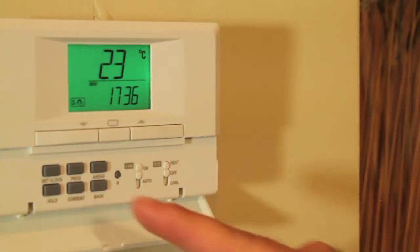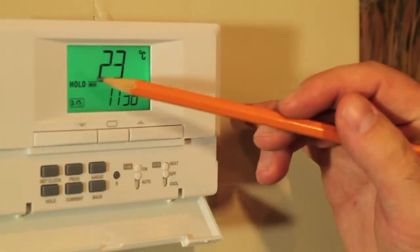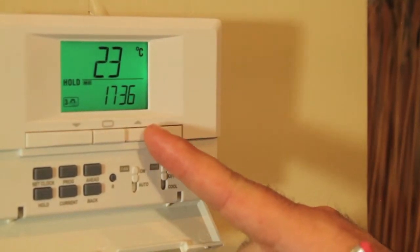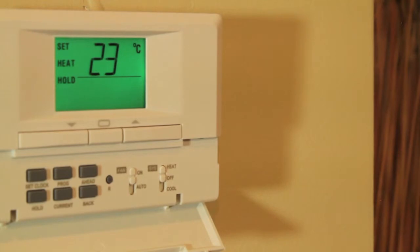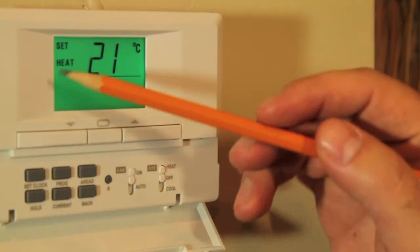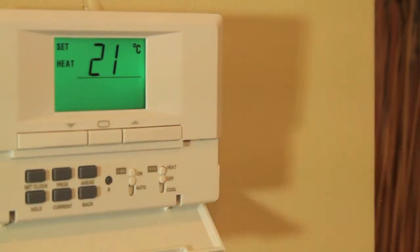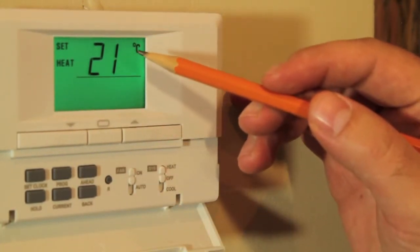If you don't want the thermostat to change the temperature automatically, you can push the hold button to put the thermostat into manual mode. The word hold will appear on screen and whatever temperature you set using the up or down arrows will stay until you change it or the hold button is pressed again. When you do press the hold button a second time, the word hold disappears from the screen and the thermostat returns to the program temperature.